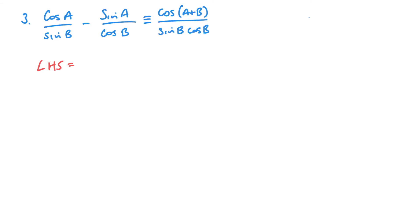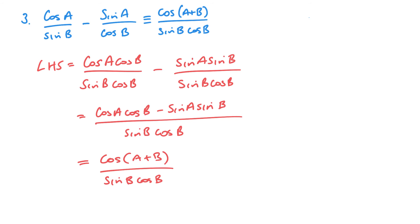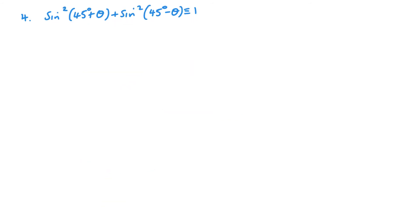So we just want to make this a single fraction. So here we're just looking at using the addition formula on both of these and taking the sine squared outside of that trig identity.